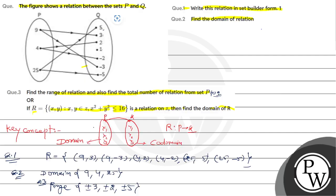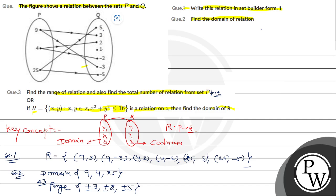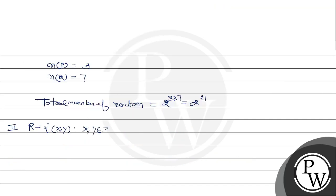Now moving further to the next part given to us — in the second part, R equals the set of ordered pairs (x, y) where x, y belong to integers, and x² + y² ≤ 16. We need to find the domain of R. Let's first write out R.